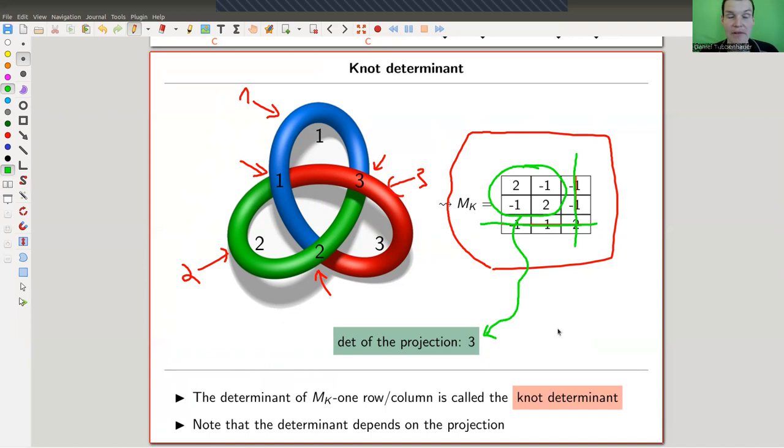And that's what you call the knot determinant. So the knot determinant, compute the knot matrix, get rid of one column and one row because the knot forces the matrix to be degenerate anyway, so the determinant will be zero. If you do that, the determinant could still be zero, but it might not be zero, like in this example, and this example is three. So you get a number associated to every knot.